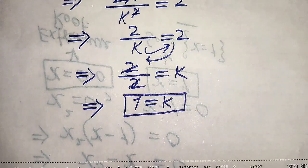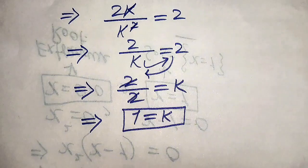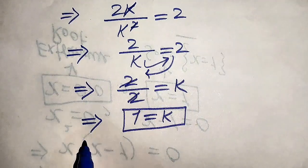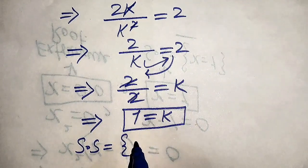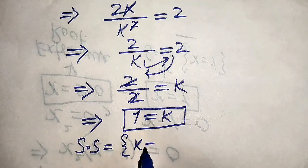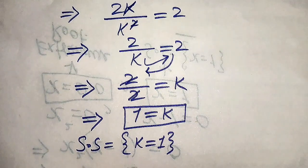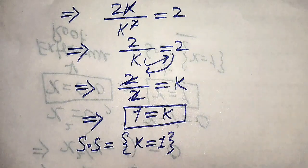In the first method we already verified that k equals 1 satisfies the given equation, so we conclude that k equals 1 is the solution set of the given equation. This is the final answer. Thank you so much for watching this video — please subscribe to my channel for more exciting videos.